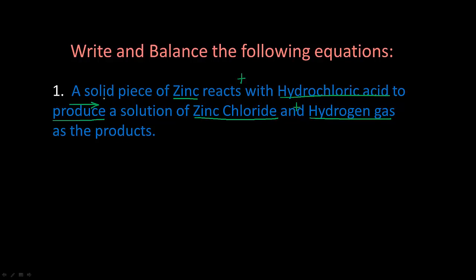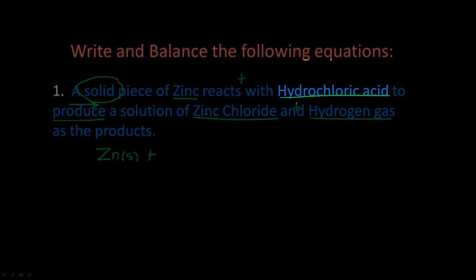The first thing we need to do: a solid piece of zinc — we know that zinc is Zn, and I'm going to put an (s) behind it to indicate that it is a solid. Then it reacts with, so now I'm going to put a plus sign, and then hydrochloric acid — we need to remember our acid naming rules.